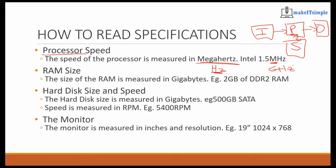Your megahertz can be a lot faster for certain things depending on the type of processor you have. Think of it like this: if you're a slow processing person, you need people to slow down and repeat themselves, but some people process really quickly and only need to hear it once. Remember, the processor only runs instructions. The megahertz tells the ALU and the CU how fast they can work together to get things done.